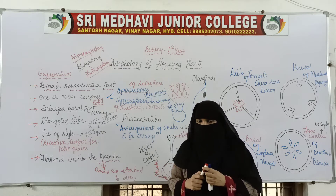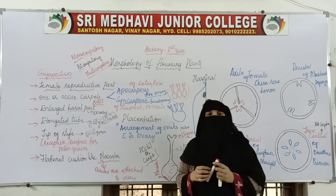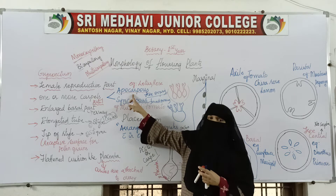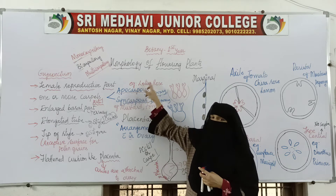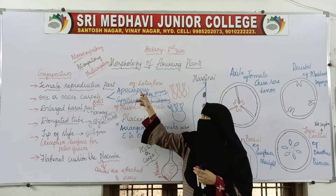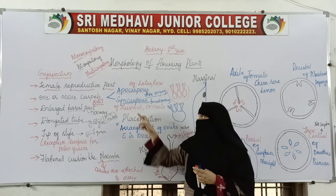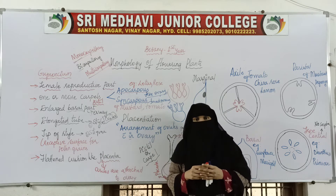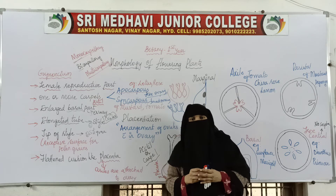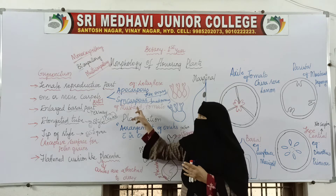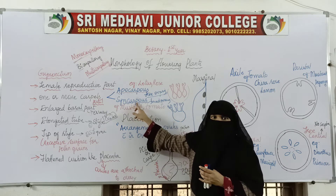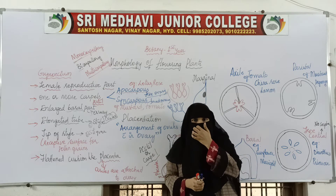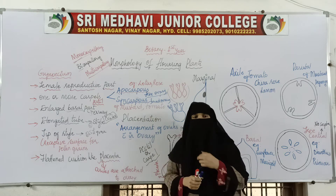If there is more than one carpel and the ovaries are free, not fused with each other, that condition is called apocarpous — which we see in lotus and rose. Whereas syncarpous means all the ovaries will be fused. If more than one carpel is present, the ovaries of the carpels will be fused, and that condition is called syncarpous — seen in mustard and tomato.